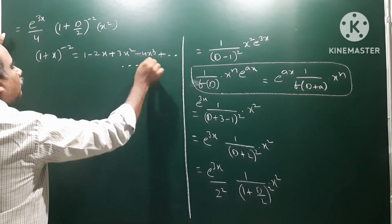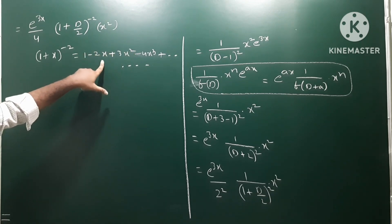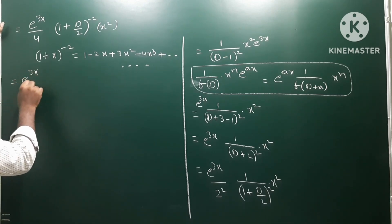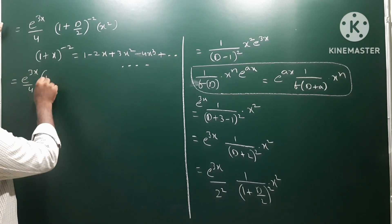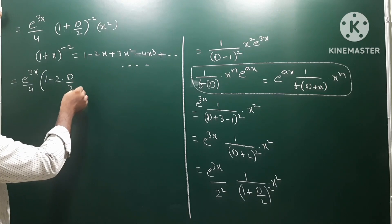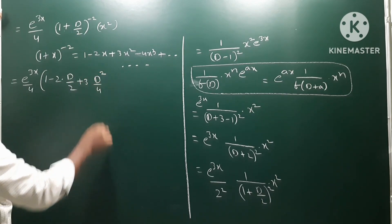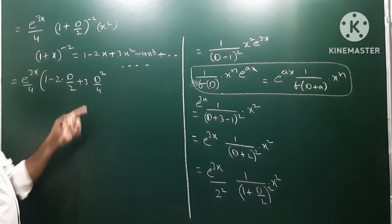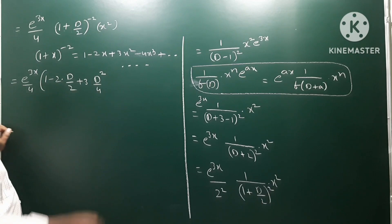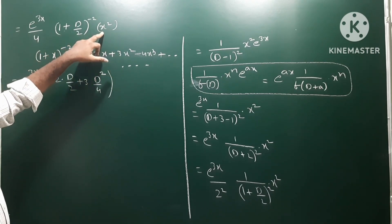Applying the expansion (1 + D/2)^(-2) = 1 - 2(D/2) + 3(D/2)² - ... to x², we get e^(3x)/4 · [1 - 2·(D/2) + 3·(D²/4)] · x². Higher order terms vanish since the third derivative of x² is zero.